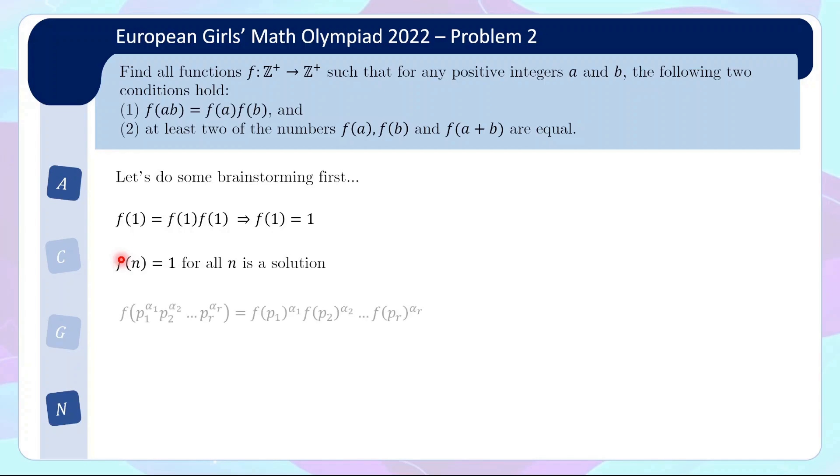Well, to investigate this, firstly we observe that actually the function will be determined by its value on the primes. Because if you have any integer, you can prime factorize it as p to the alphas. And then by the multiplicative property, it's basically taking the alpha power of the individual fp's. So by knowing the values on the primes, we can actually fully describe the function.